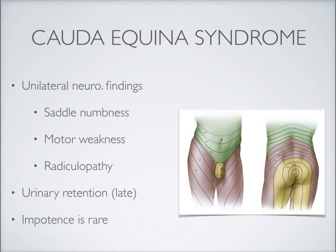As far as reflexes go in cauda equina syndrome, we're going to see both ankle and knee jerk reflexes affected. Because these are lower motor neuron lesions, they're very likely to be hyporeflexic. We might also see urinary retention later on in the progression of this condition if it is not detected quickly — in contrast to the urinary incontinence found with conus medullaris syndrome. Impotence is quite rare in males affected with cauda equina syndrome.